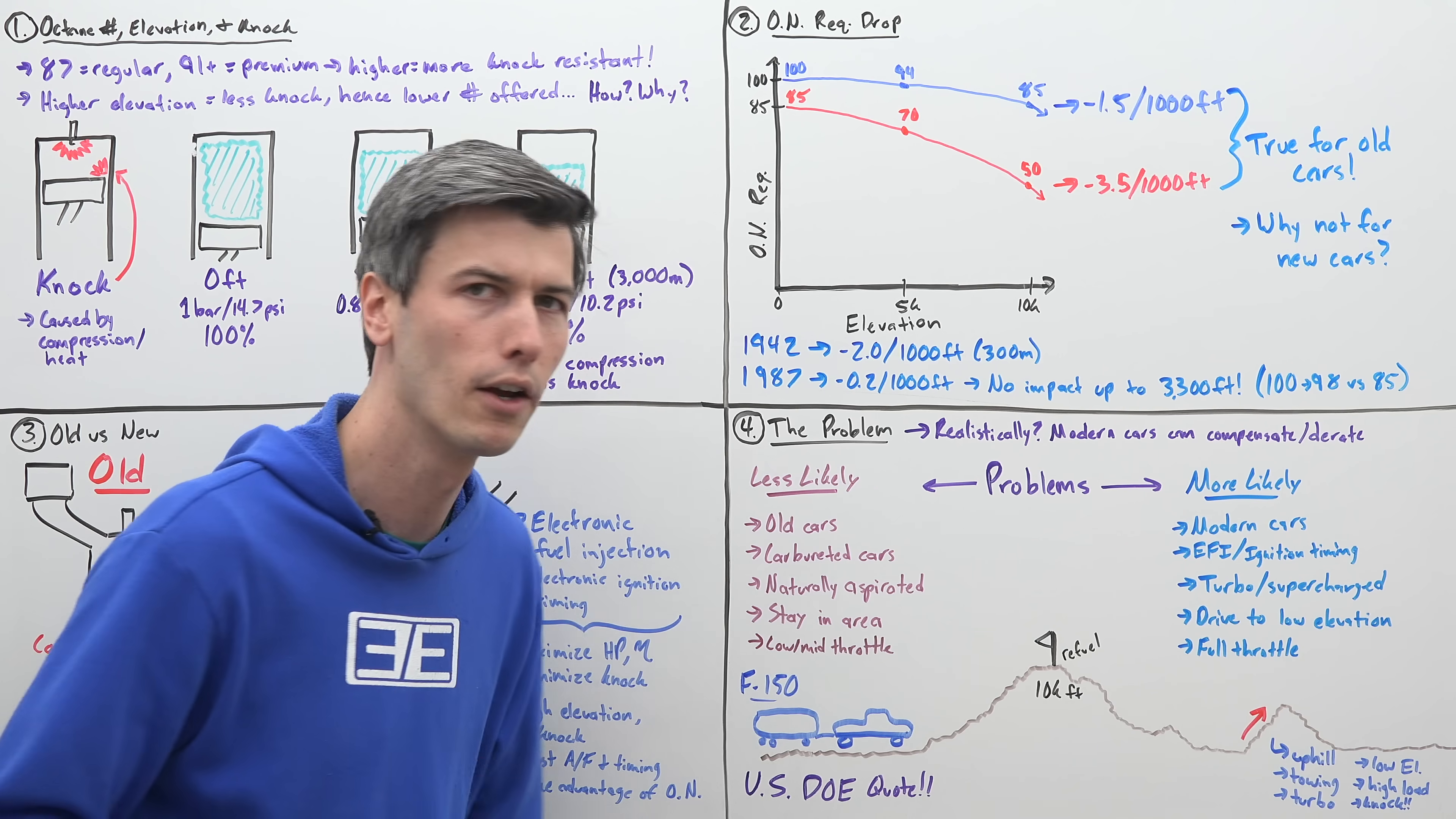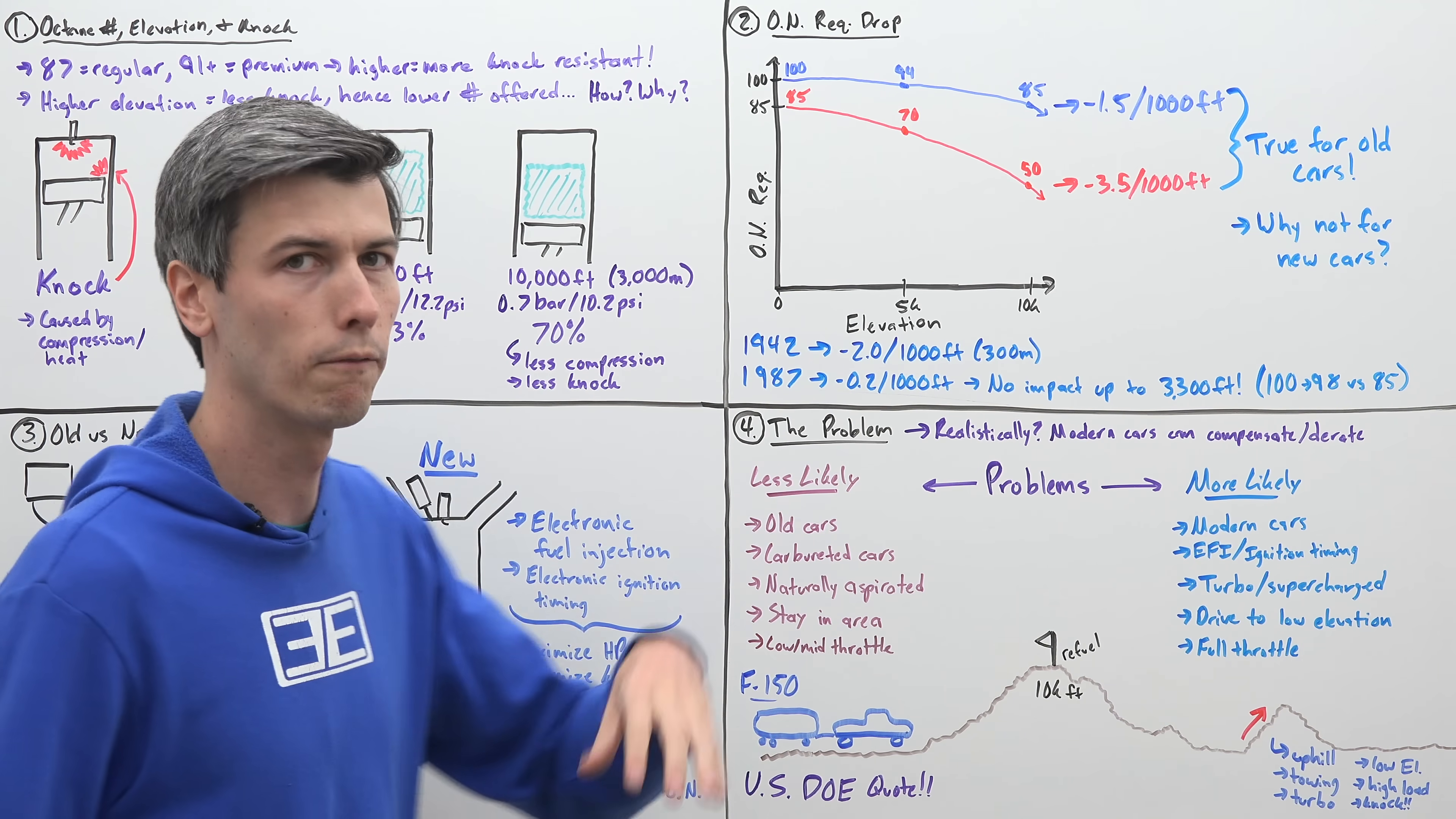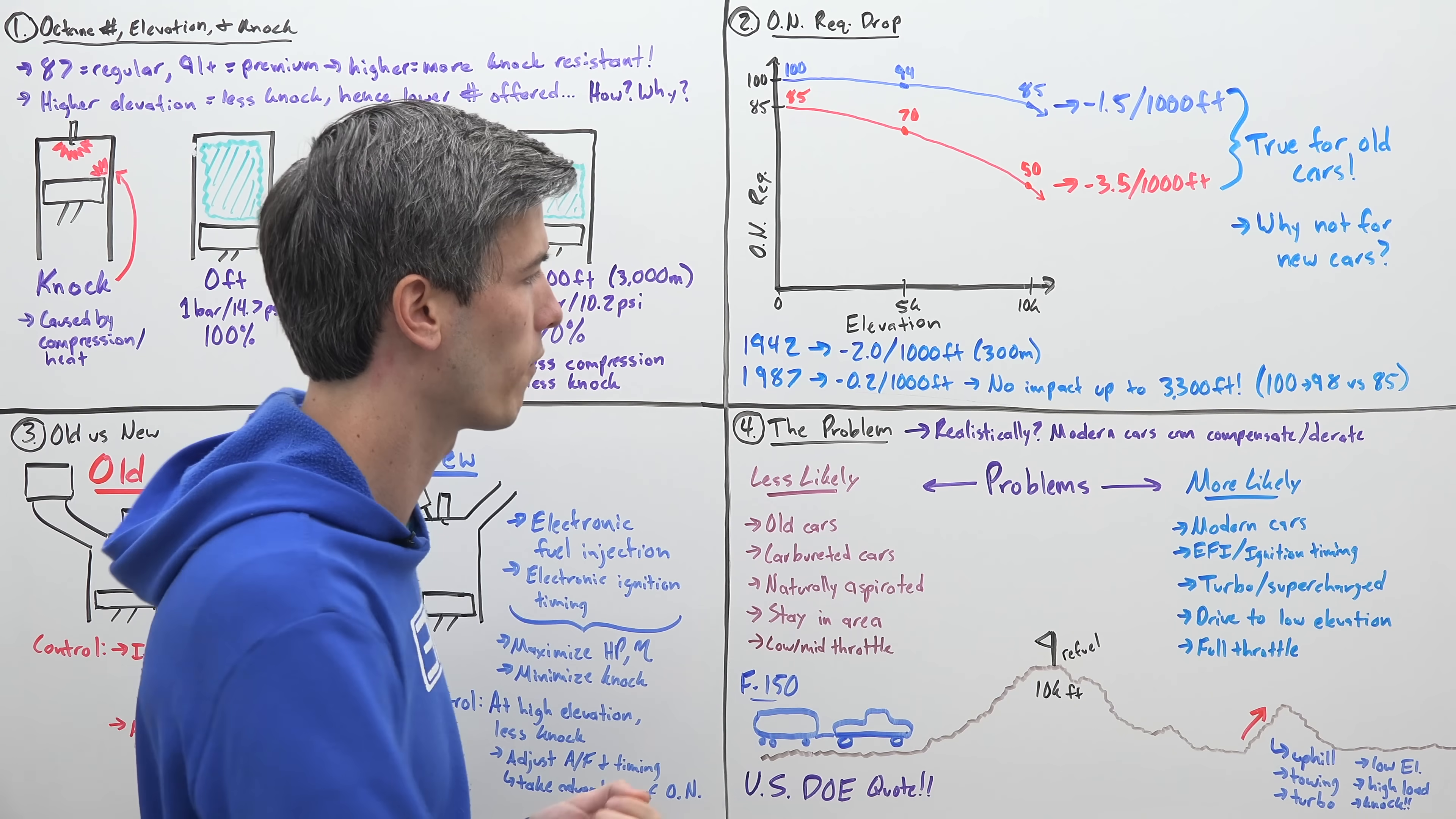It's less likely for you to have problems if you're driving an older car, if you're driving a carbureted car, if you're driving a car that is naturally aspirated, meaning the pressures within the cylinders are not all that high, or if you stay within the area. If you live at 9,000 feet and you just drive around at 9,000 feet, not as likely that you're going to run into problems versus if you live at 9,000 feet, you take that fuel down to sea level and then keep using the car. Then you have those higher pressures and now you can run into trouble. Also, if you just don't use high throttle, if you're always driving around with low or mid throttle, not using the full power of your engine, you've got lower pressures in your cylinders, so it's less likely that you'll have problems from knock.